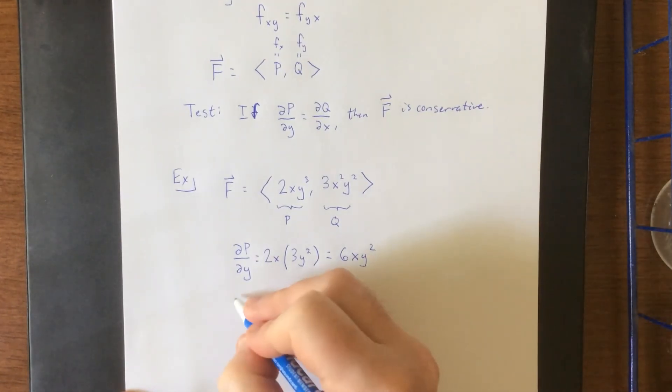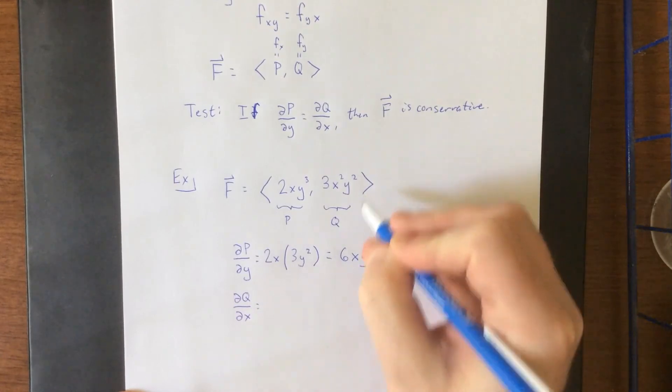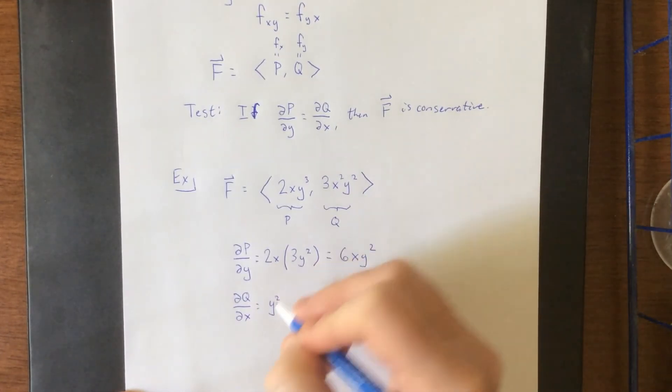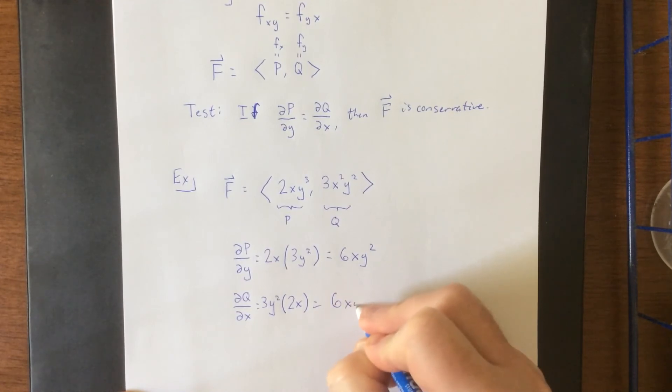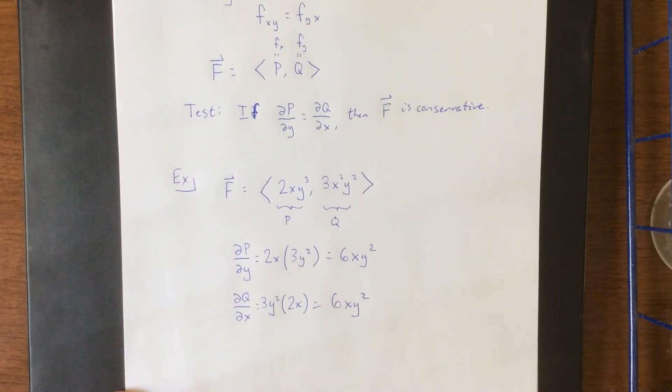Doing the same thing for q, this time differentiating with respect to x, we'll be treating the 3y squared as though it's a constant multiple, and differentiating the x squared with respect to x. Then reordering appropriately, this would be 6xy squared.